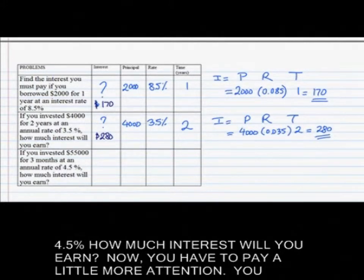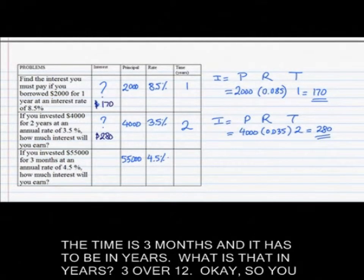How about another problem? If you invested $55,000 for three months, now we have less than one year, at an annual rate of 4.5%, how much interest will you earn? You have to pay a little more attention. Be careful with the time. The time is three months, and it has to be in years. What is that in years? 3 over 12.